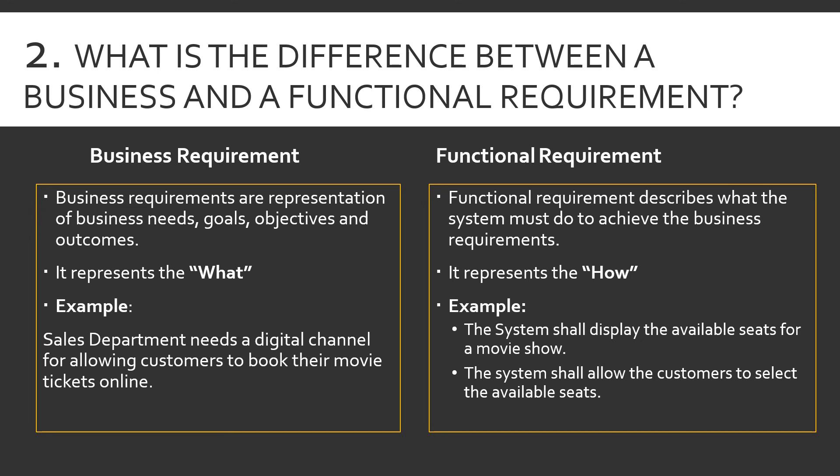It doesn't give guidance on how it can be achieved — it just represents the 'what.' Functional requirements, on the other hand, describe what a system must do to achieve the business requirement — they represent the 'how.' For example: the system shall display the available seats for a movie show; the system shall allow customers to select the available seat. It talks more on how to meet the business requirement and ties back into it.